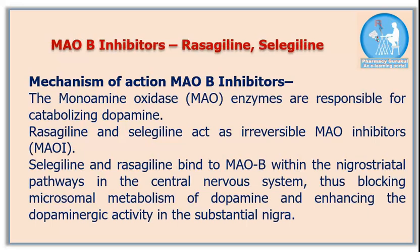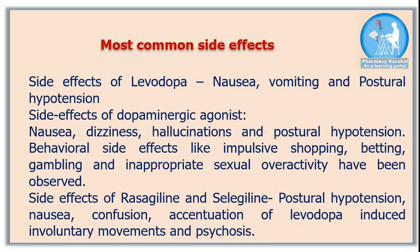For MAO-B inhibitors — rasagiline and selegiline: monoamine oxidase enzymes are responsible for catabolizing dopamine. Rasagiline and selegiline act as irreversible MAO-B inhibitors, thereby preserving dopamine levels in the brain.